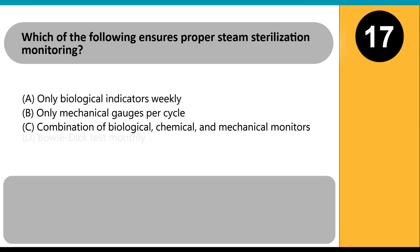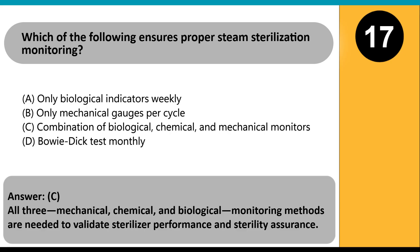Which of the following ensures proper steam sterilization monitoring? A. Only biological indicators weekly. B. Only mechanical gauges per cycle. C. Combination of biological, chemical, and mechanical monitors. D. Bowie-Dick test monthly. Answer: C. All three — mechanical, chemical, and biological monitoring methods — are needed to validate sterilizer performance and sterility assurance.